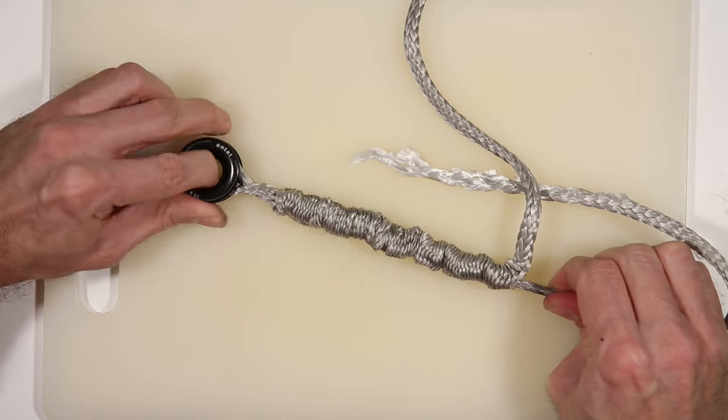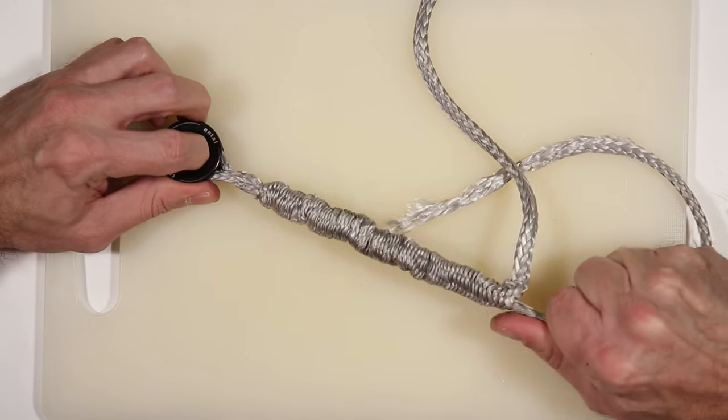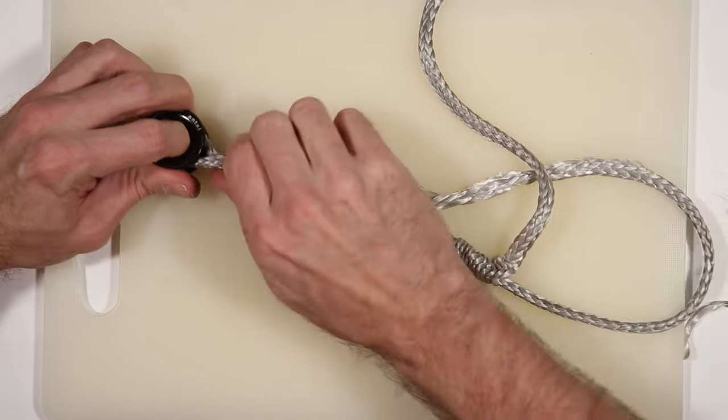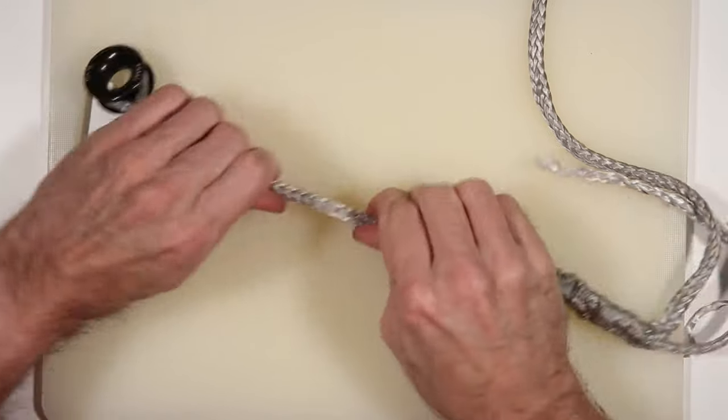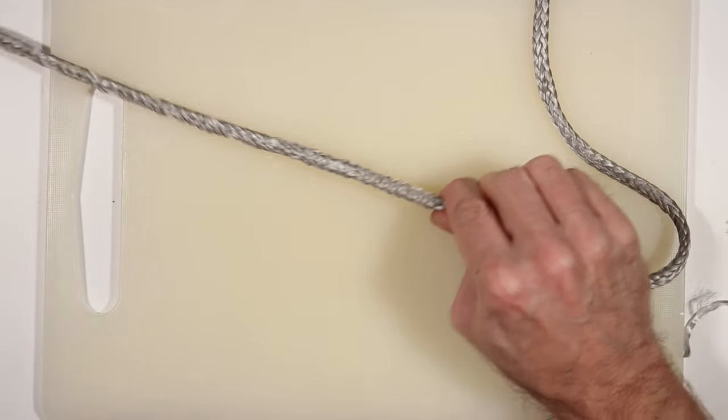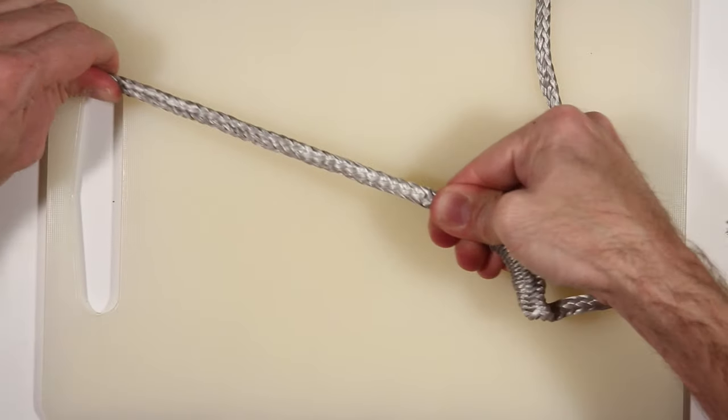Before you pull the outer core down over the tapered end, you want to make sure it's very tight because once you pull the core over you won't be able to adjust it. You can see now the extra length that I've used just for this video.